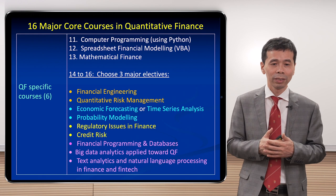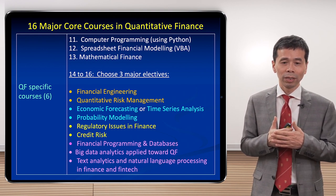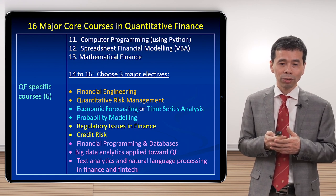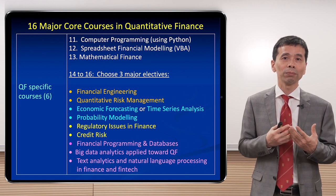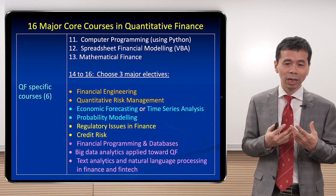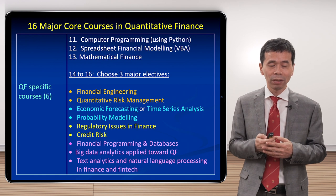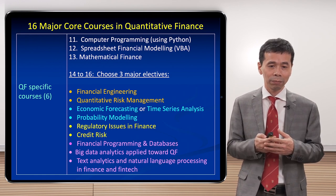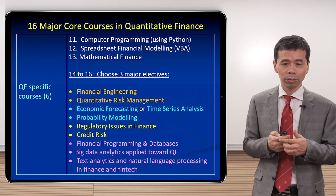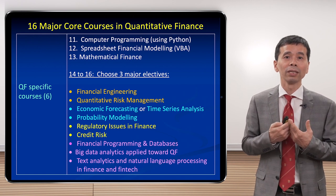For quantitative finance students specifically, there are six additional courses. These include two programming courses and one course called Mathematical Finance, which provides advanced mathematical modeling skills to price more complicated financial products. There is also a list of major electives to fit students with different interests. For example, for students keen on fintech, there are courses in Financial Programming and Database, Big Data Analytics applied to Quantitative Finance, and Text Analytics and Natural Language Processing.